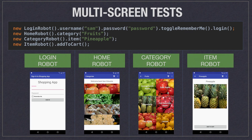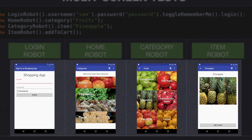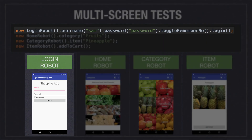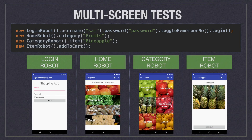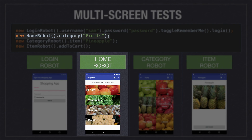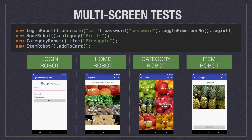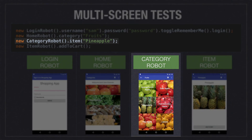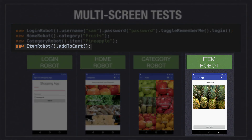Many UI tests span multiple screens in an application. Here's an example of a flow through our app that goes from the login screen to the home screen, which displays a list of categories, then to the fruits category, and finally the pineapple item detail page where we can add that item to our cart. We use the same login robot code from before, plus the home robot for the categories list, the category robot to select pineapple, and the item robot to add pineapple to our cart, finishing this test scenario.